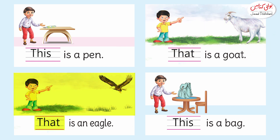Now let's see the next picture. There is a boy and an eagle — is the eagle close to him or far? The boy is pointing towards the eagle, and the eagle is far from the boy. So we are going to use 'that': 'That is an eagle.'